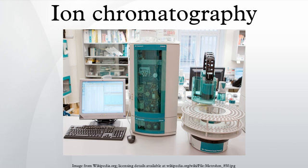Ion-exchange chromatography retains analyte molecules on the column based on Coulombic interactions. The stationary phase surface displays ionic functional groups that interact with analyte ions of opposite charge. This type of chromatography is further subdivided into cation-exchange chromatography and anion-exchange chromatography.